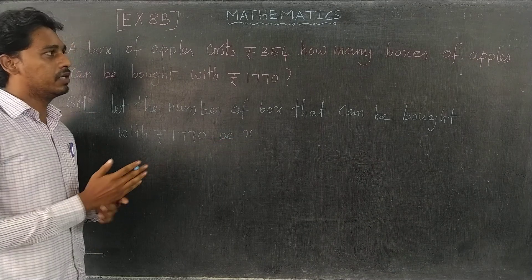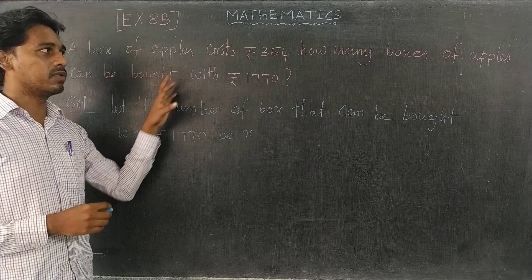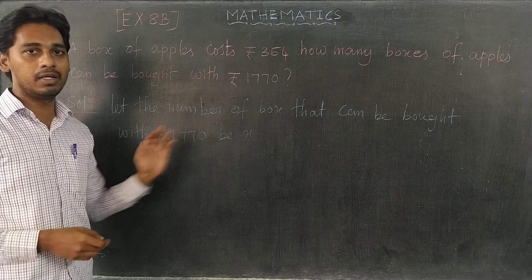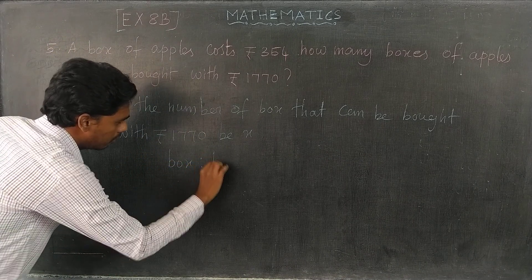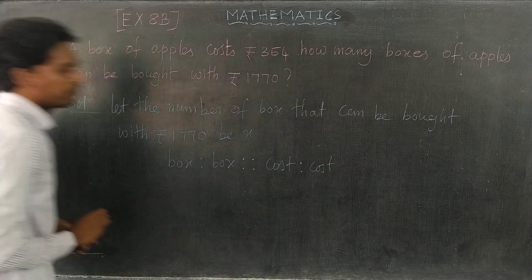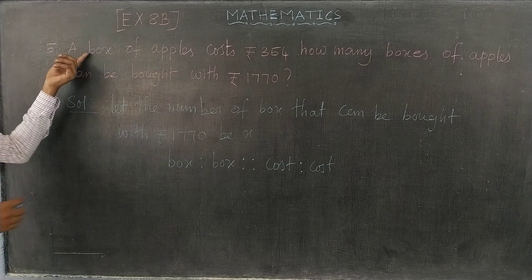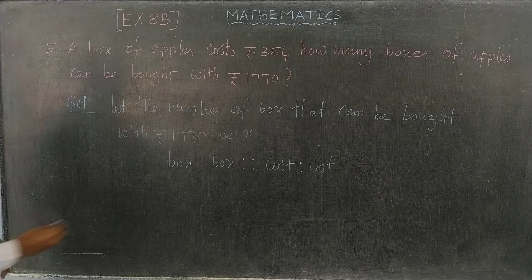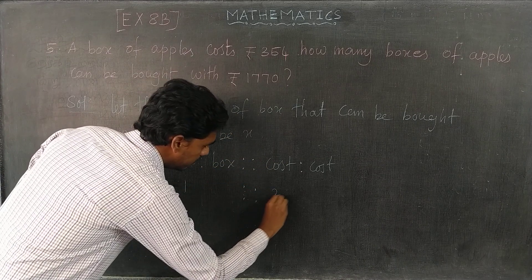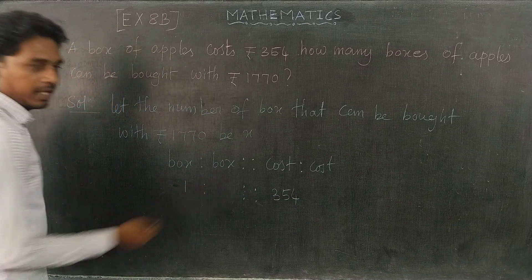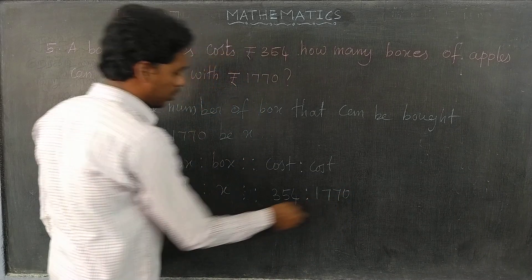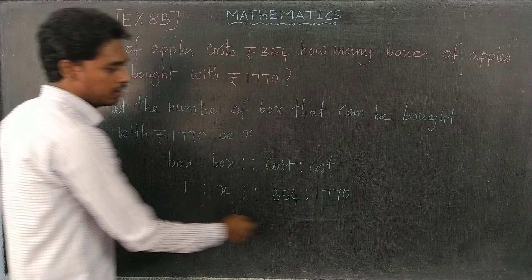That means x. One box costs Rs. 354. So the proportion is: one box costs Rs. 354, and x boxes cost Rs. 1770.